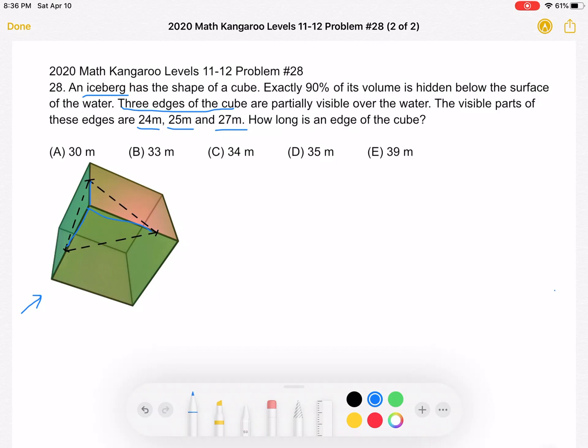We're going to start with finding the volume of the visible portion. And as we can see, the visible portion is a triangular pyramid. And the volume of a triangular pyramid can be represented as 1/3 base times height. And I just wrote V sub P to represent the volume of the pyramid.